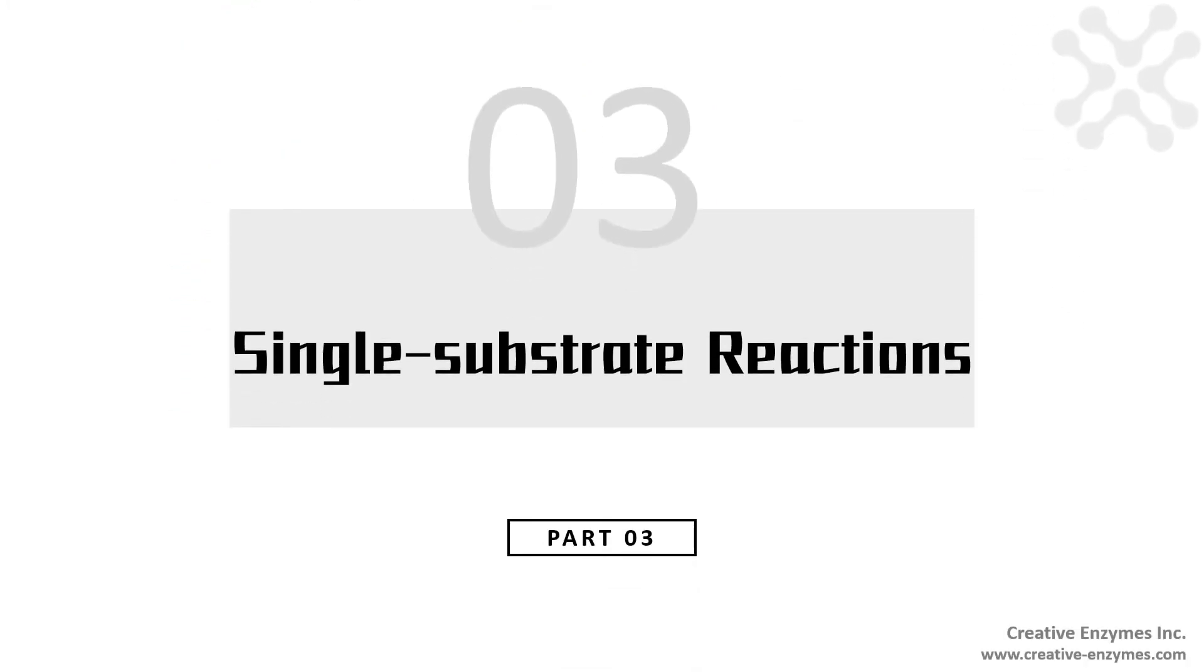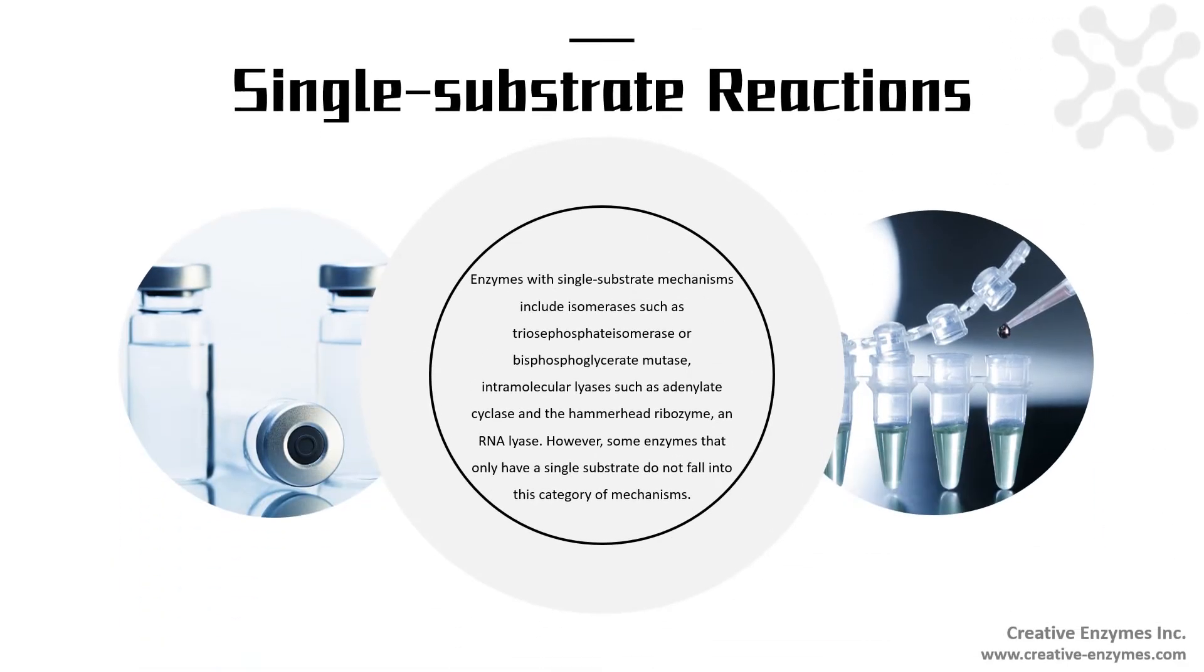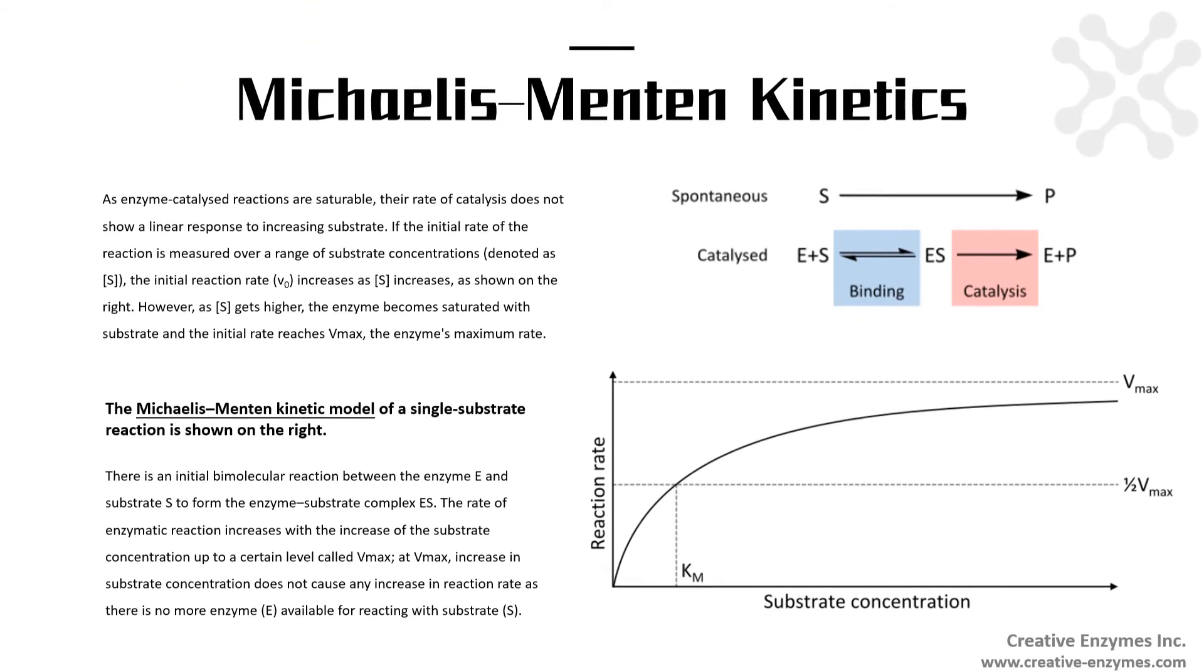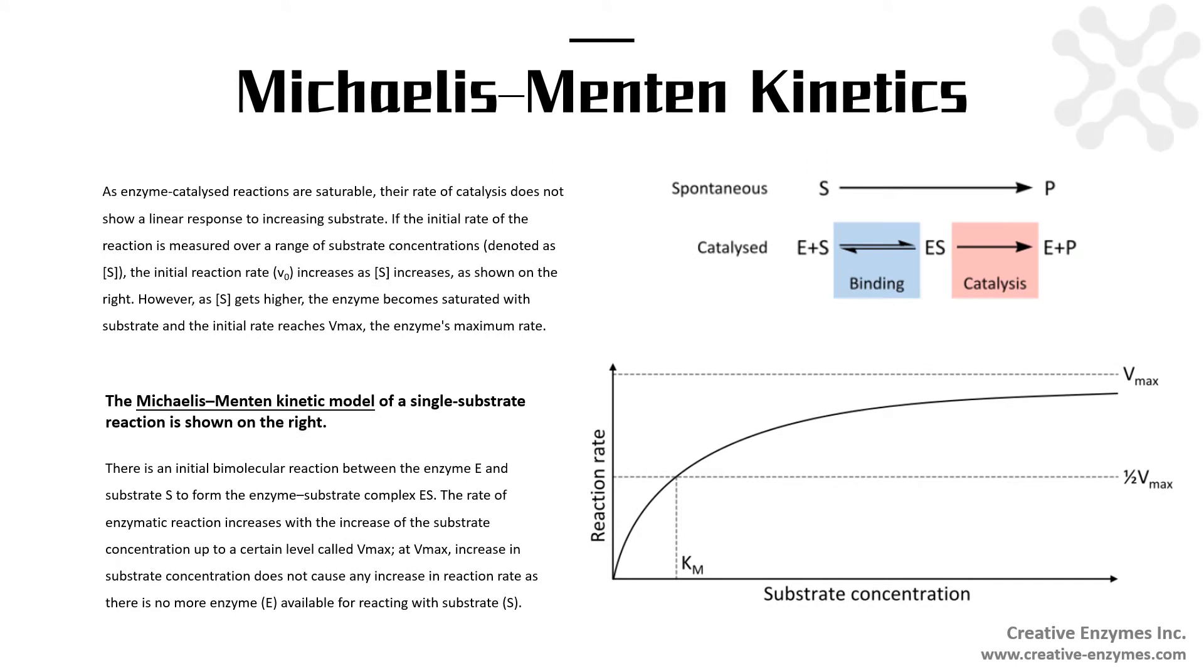Single substrate reactions. Enzymes with single substrate mechanisms include isomerases such as triosephosphate isomerase or bisphosphoglycerate mutase, intramolecular lyases such as adenylyl cyclase and the hammerhead ribozyme, an RNA lyase. The Michaelis-Menten kinetic model of a single substrate reaction is shown on the right. There is an initial bimolecular reaction between the enzyme E and substrate S to form the enzyme-substrate complex ES.